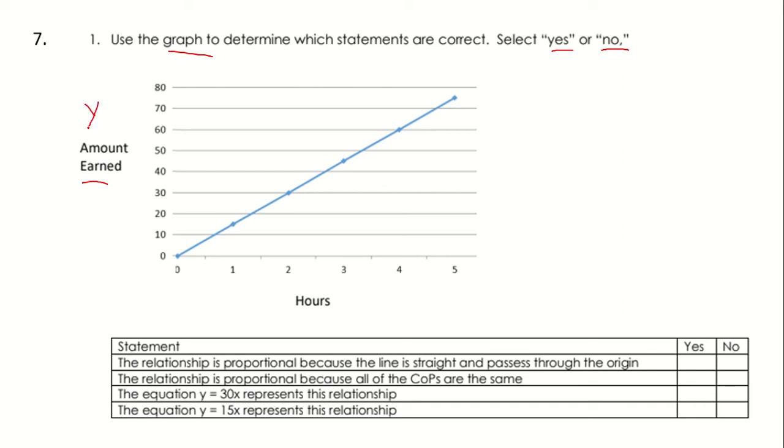We have the amount earned, this is our y-axis, our dependent variable. And we have the hours, which is our x-axis, or the independent variable.